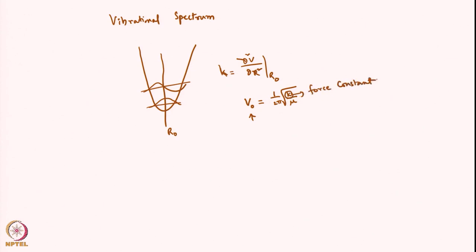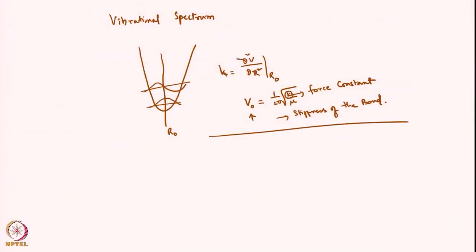The force constant is nothing but the stiffness of the bond — it's like the stiffness of a spring, whether the spring is strong or weak. So the force constant tells you whether the bond is a strong bond or a weak bond. Now let us apply this concept to HCl, specifically H-1 and Cl-35, and DCl, D-2 and Cl-35.